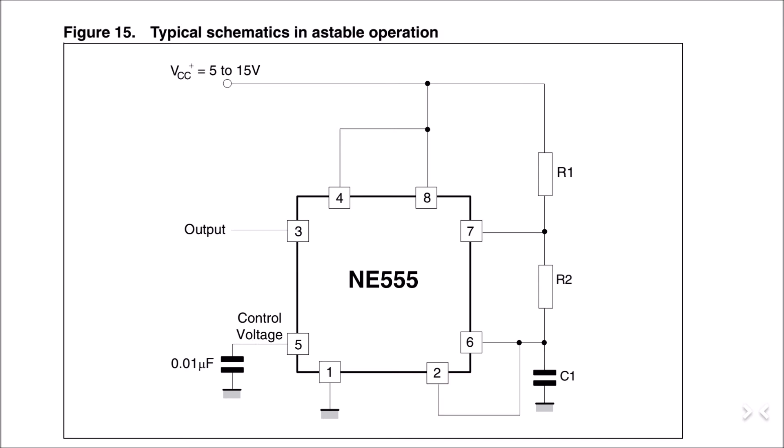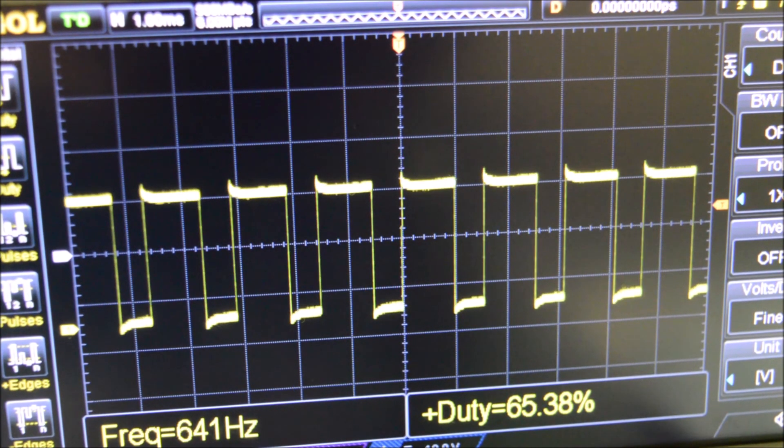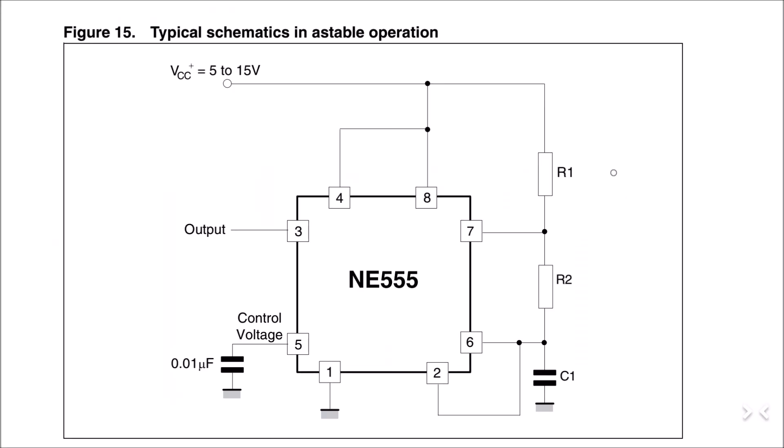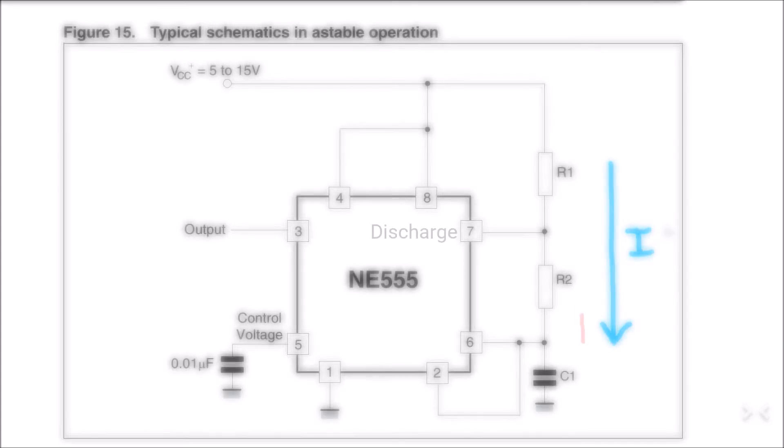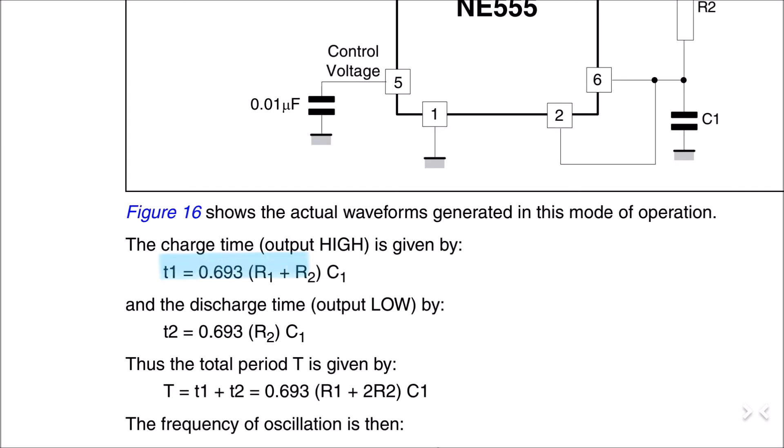Now, the third and last operation is the astable multivibrator, which is, in simple words, an oscillator which can create a square wave with a variable duty cycle and also adjustable frequency. In this operation, the capacitor charges up through the resistor R1 and R2, and discharges only through the resistor R2. By this way, the on time of the square wave depends on the resistor 1 and resistor 2, and the off time only depends on the value of R2.